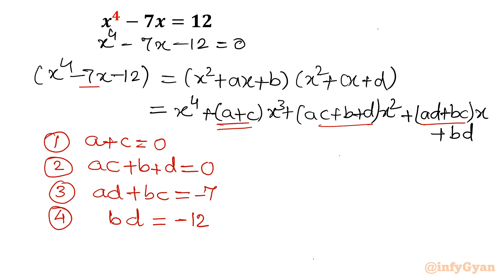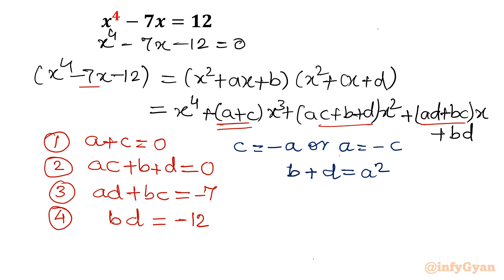From equation 1, a + c = 0, so c = -a. Substituting into equation 2: ac + b + d = -a² + b + d = 0, so b + d = a². Substituting c = -a into equation 3: ad + bc = a(d - b) = -7, which gives b - d = 7/a.